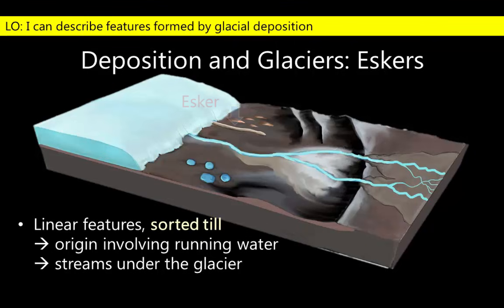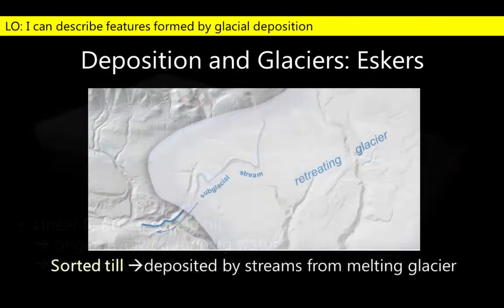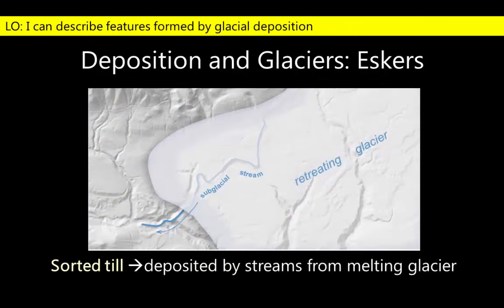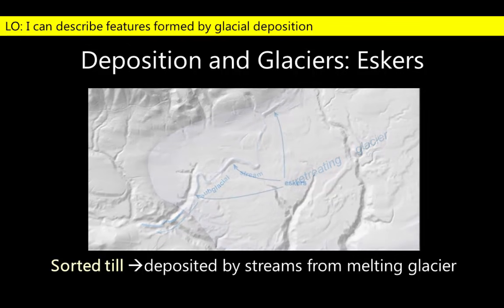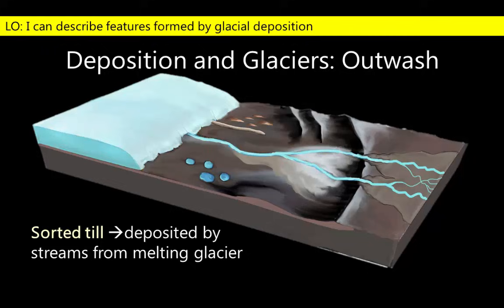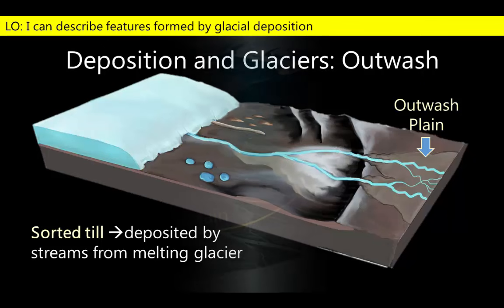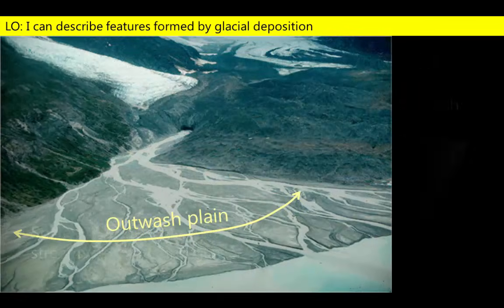A feature known as an esker may be formed when till is sorted by streams flowing at the base of the melting glacier. The sediment deposited within these subglacial streams leaves behind a skinny, sinuous landform. Likewise, as the glacier melts and its ice turns to water, meltwater streams transport sediment away, depositing some of it in the adjacent outwash plain.